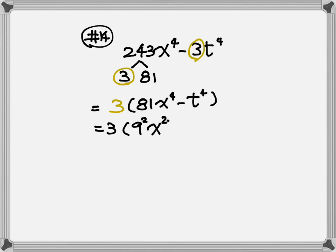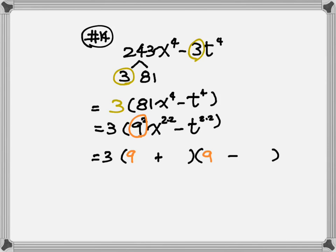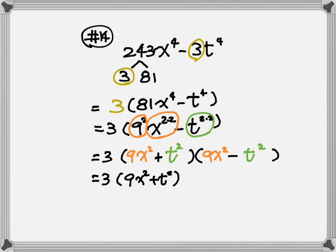Keep the 3 outside. 81 is a nice perfect square. For x to the fourth power, change it to x squared times x squared, and t to the fourth becomes t squared times t squared. Keep the 3, then draw two parentheses — one plus, one minus. The first number is 9, so put 9 in each one; then x squared in each one. Then you have t squared in each position.